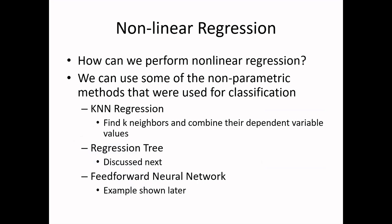Linear regression cannot handle all problems — many situations require non-linear regression. One simple approach is k-nearest neighbor regression: rather than voting among the k closest neighbors as in classification, we find the k closest points and use their output values to predict the target.